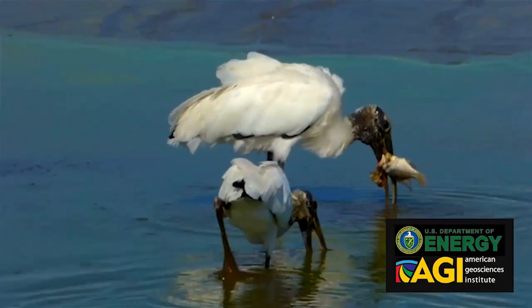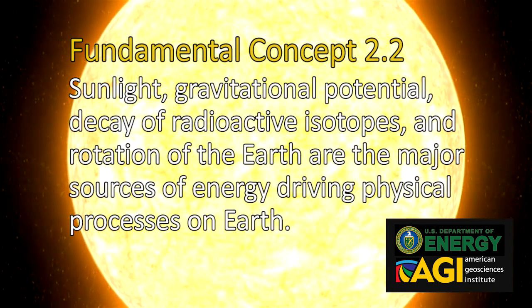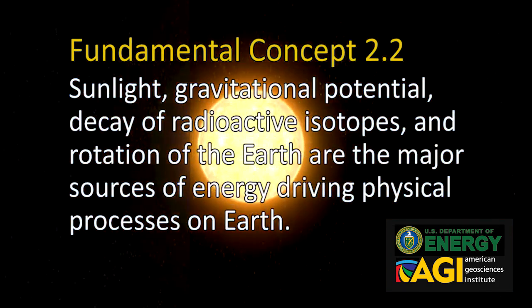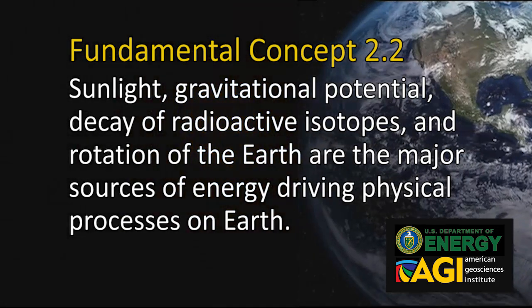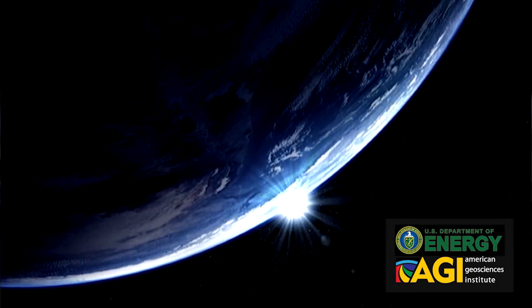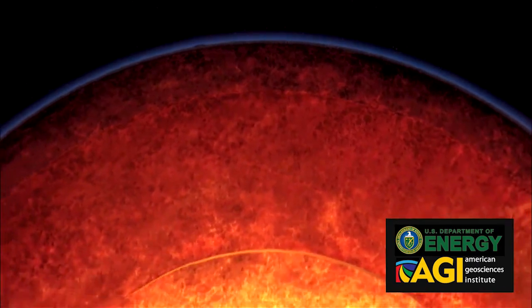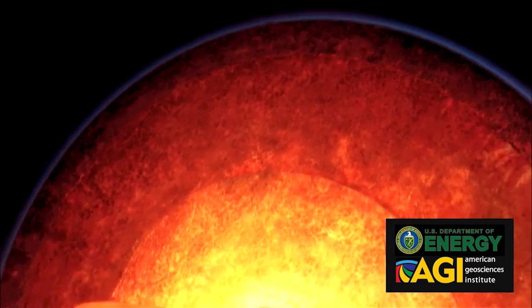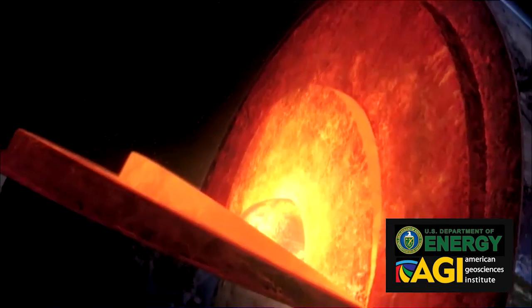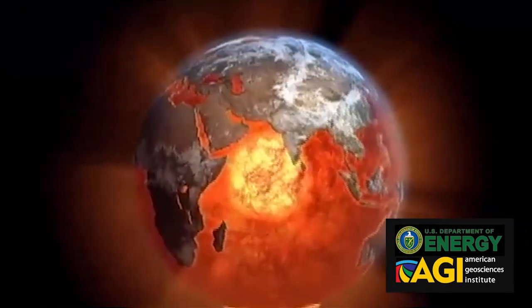Both living and non-living processes have contributed to this change. Sunlight, gravitational potential, decay of radioactive isotopes, and rotation of the Earth are the major sources of energy driving physical processes on Earth. Sunlight is a source external to Earth, while radioactive isotopes and gravitational potential — with the exception of tidal energy — are internal. Radioactive isotopes and gravity work together to produce geothermal energy beneath Earth's surface.